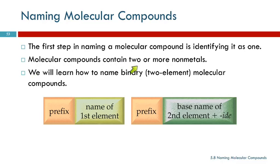Molecular compounds can contain two or more nonmetals. They could have lots and lots of nonmetals. We are only going to learn how to name ones with exactly two nonmetals. These are called binary molecular compounds because they have just two elements.